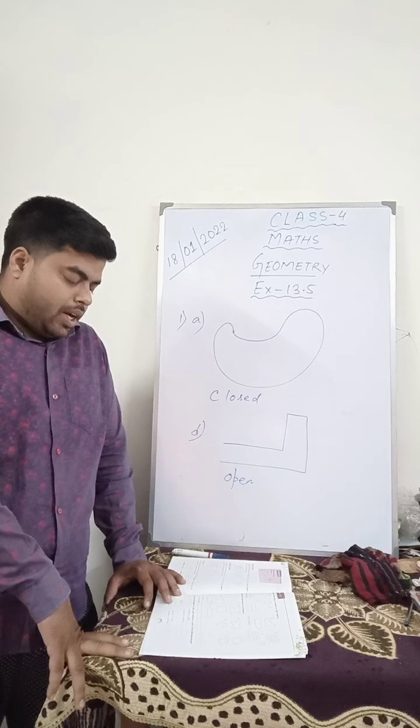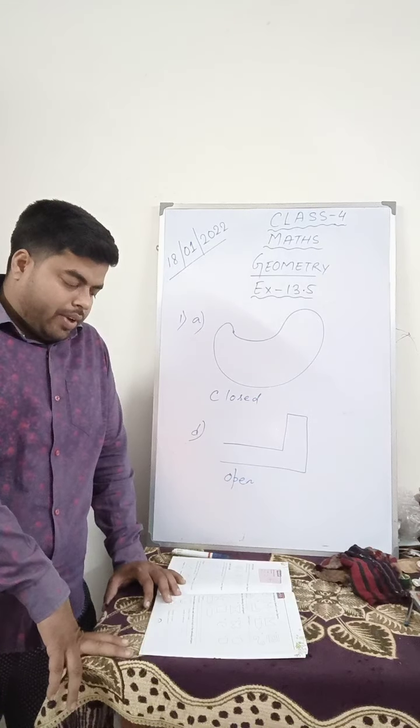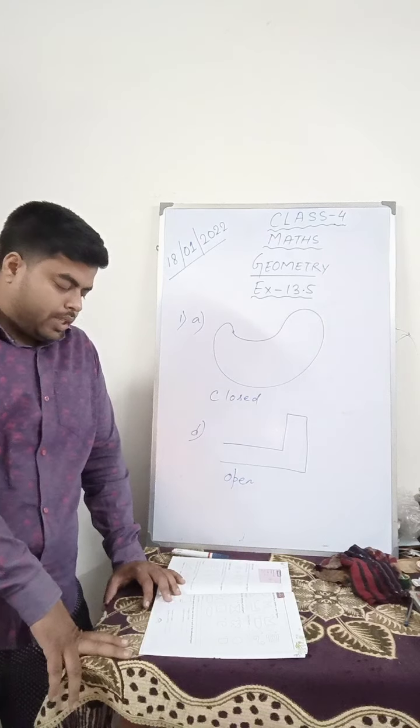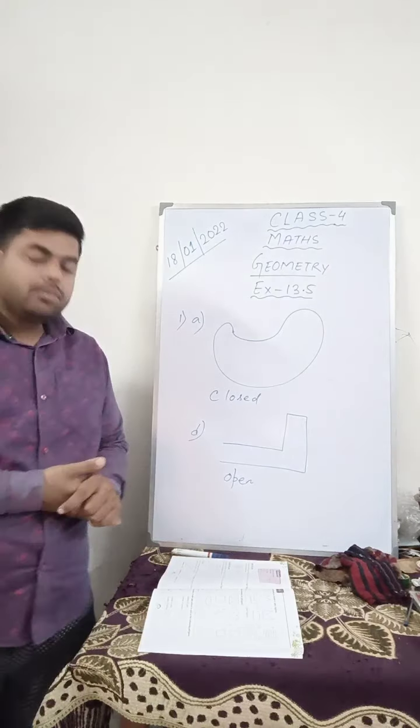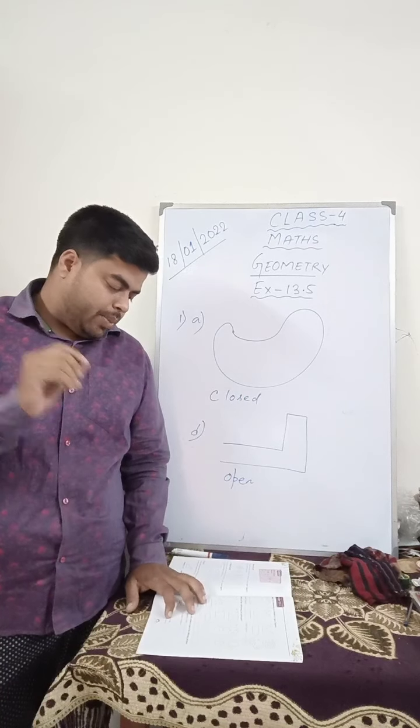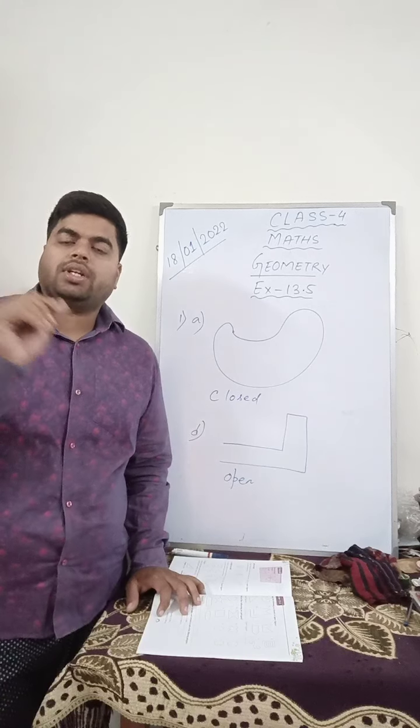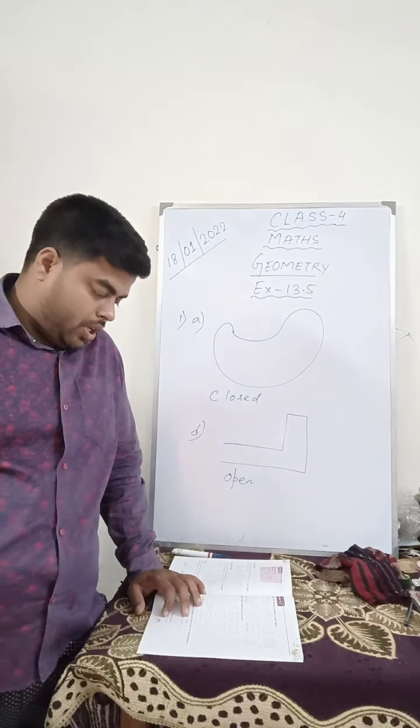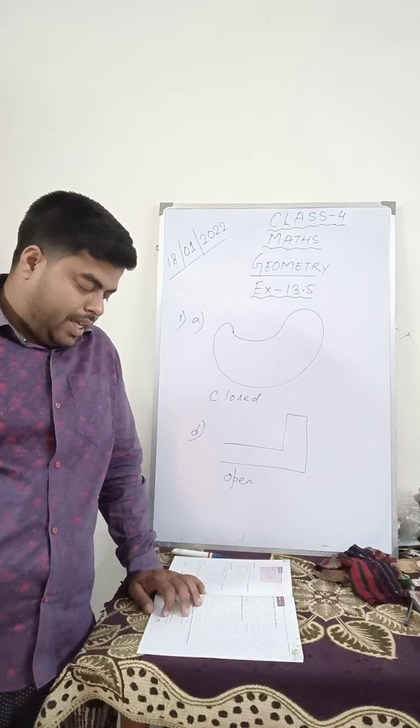Now, which of the following are polygons? They have given you a few diagrams where they have asked you whether it is a polygon or not. So question number A is a polygon, which has six sides, that is known as hexagon. Number D is also a polygon. Number B is also a polygon, E,